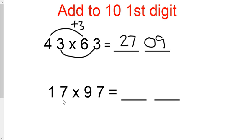Let's see another example. Last digits are the same. First digits add to ten. Seven times seven is forty-nine.